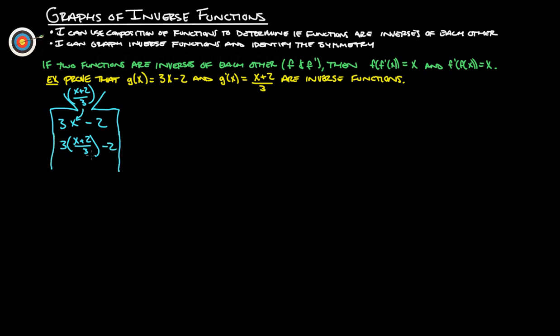And then this 3 times x plus 2 over 3, guess what? These 3s reduce down to 1, so we really get x plus 2 minus 2. And so when we take x plus 2 minus 2, we get x comes out. So half of it, we've done this part.